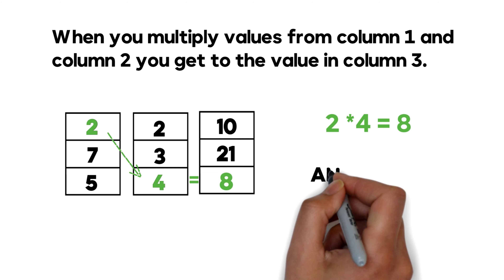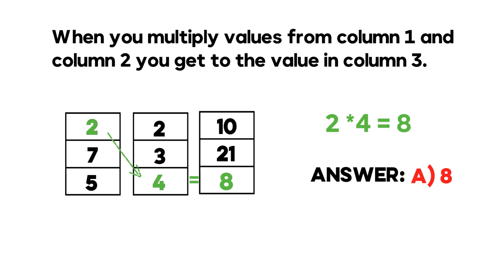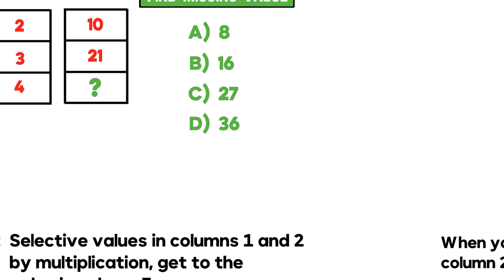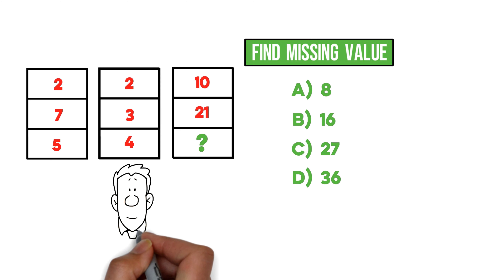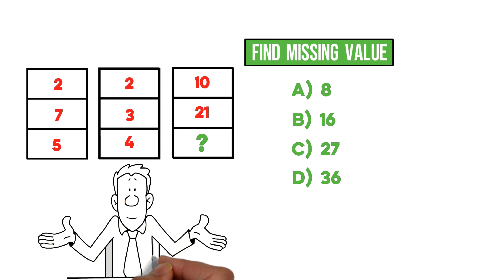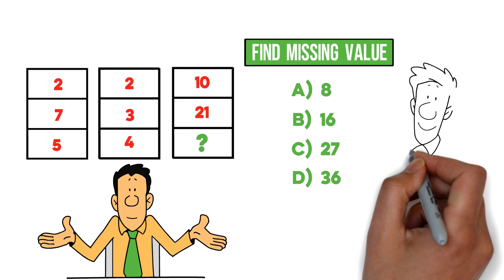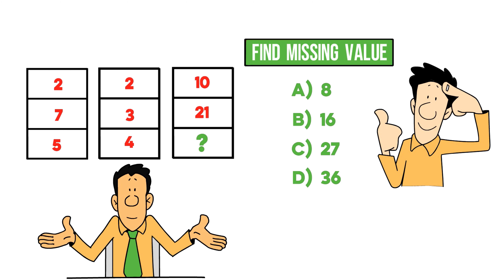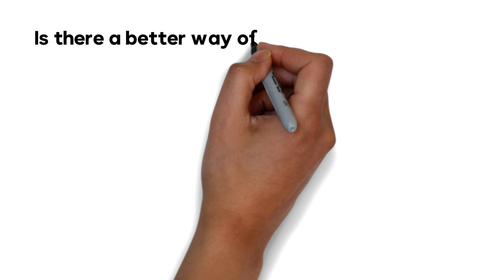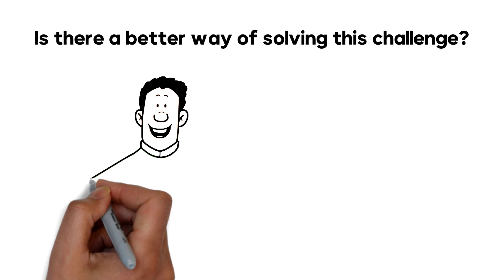One of the typical mistakes people make is looking only within individual columns. Unfortunately there is no pattern just by looking at the values in column 1 alone, or only at column 2, or only at column 3. You have to look across and take a global view across multiple columns to get to the correct solution. If you have a better way of solving this challenge, please share your thought process in the comment section.